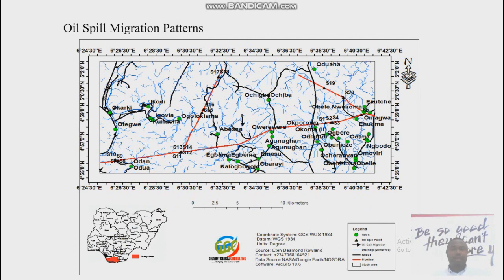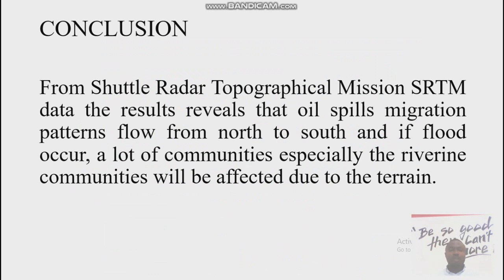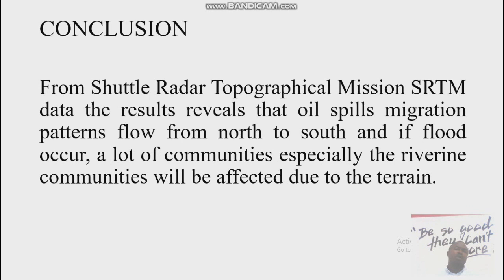This is the oil spill migration pattern. When we say oil spill migration pattern, we mean how the drainage system flows in that area — specifically the flow direction. From the SRTM data, results reveal that oil spill migration patterns flow from north to south, and if flooding occurs, many communities — especially riverine communities — will be affected due to the terrain. It is important to consider migration patterns when carrying out oil spill assessments, and also when planning drilling operations, so you can know which direction a spill will travel and which communities are at risk.